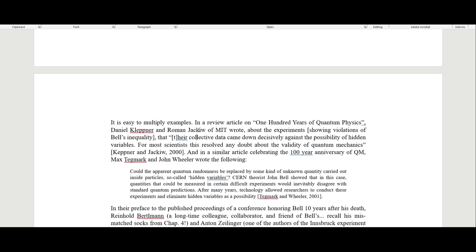In a review article on 100 years of quantum physics, Daniel Kleppner and Roman of MIT wrote about the experiments showing violations of Bell's inequality that their collective data came down decisively against the possibility of hidden variables. For most scientists, this resolved any doubt about the validity of quantum mechanics.